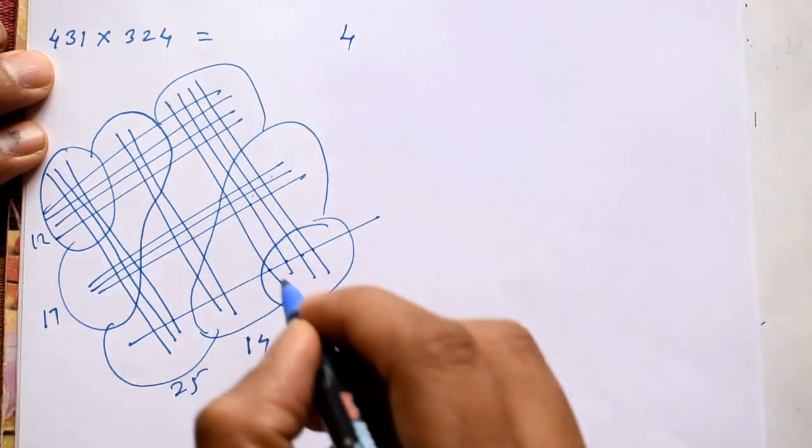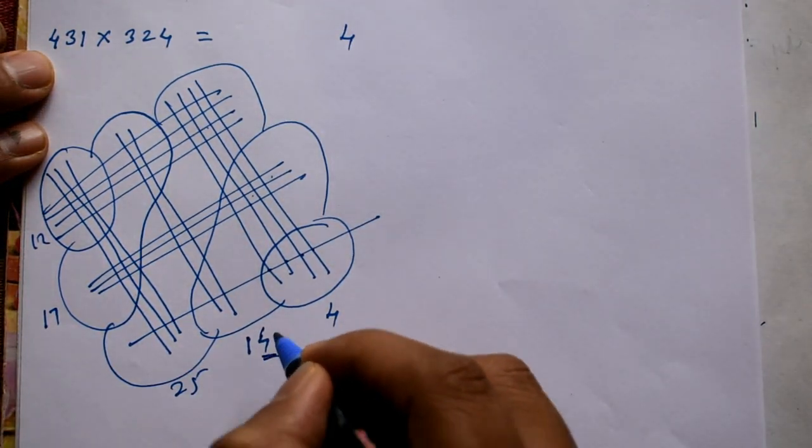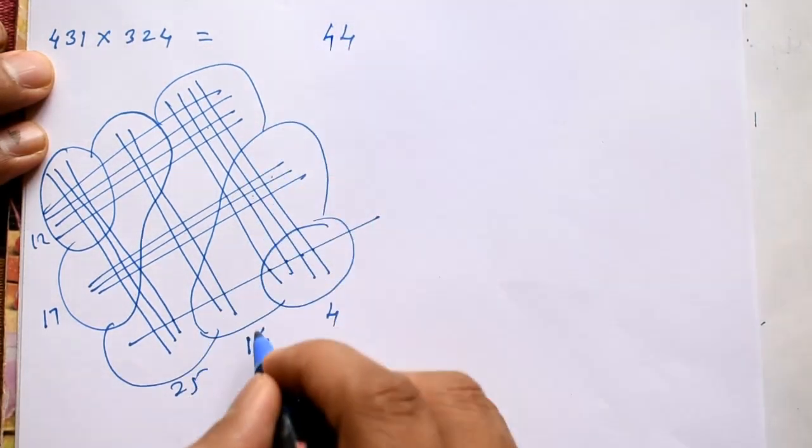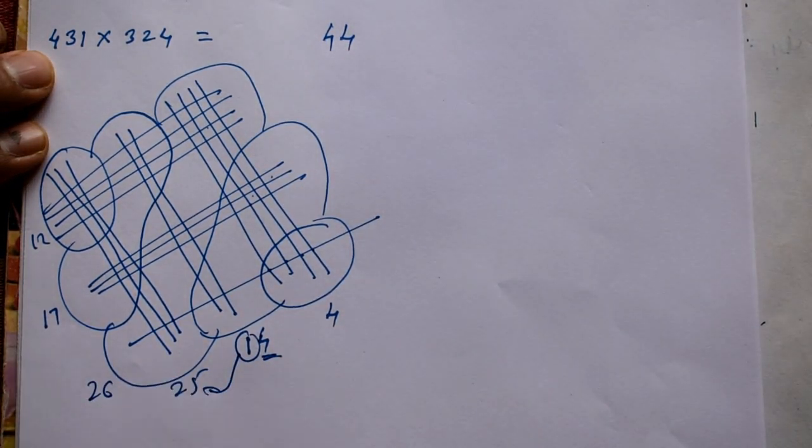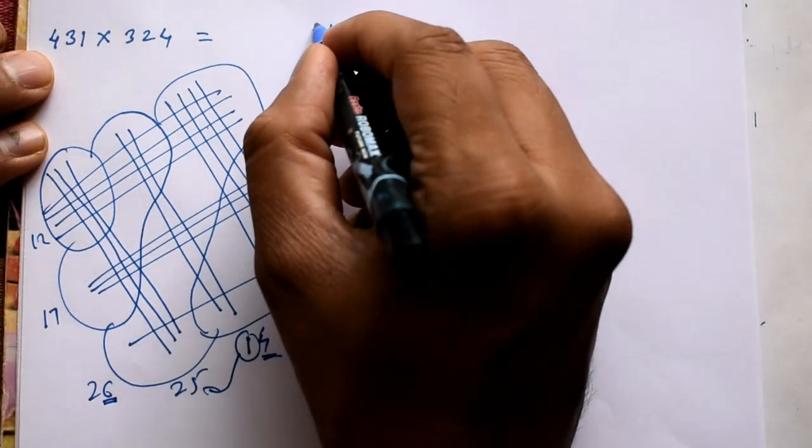Right, last digit, that is 4. The next is 14. Take the last number, it is 4. Remaining 1. And add it. This is 26, last is 6.